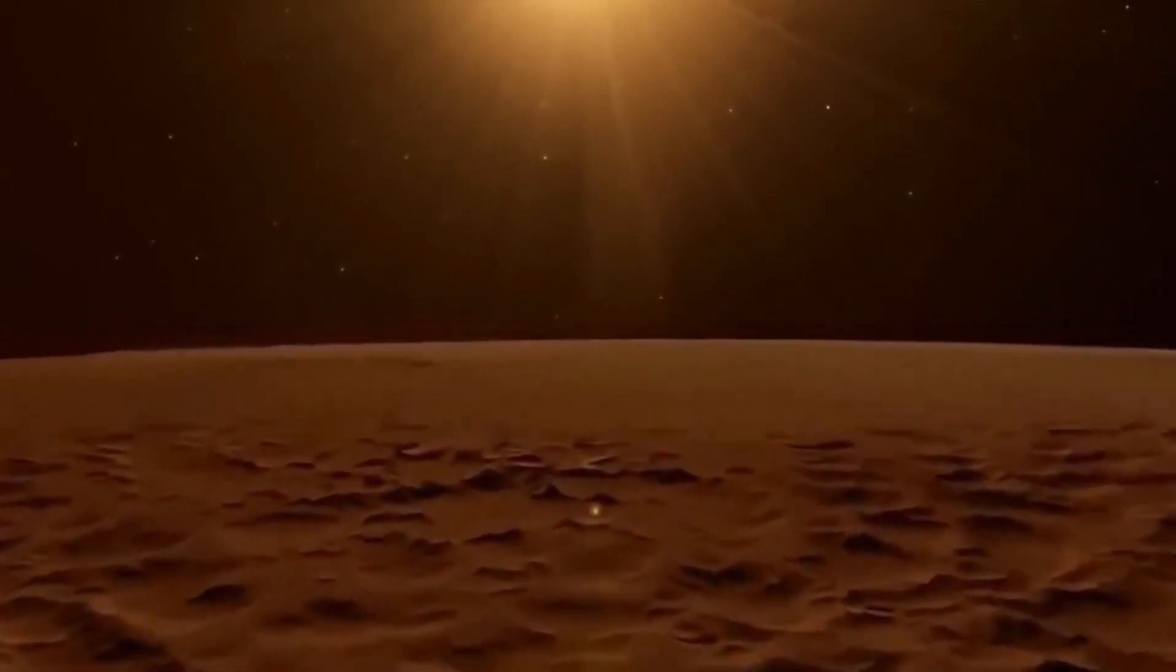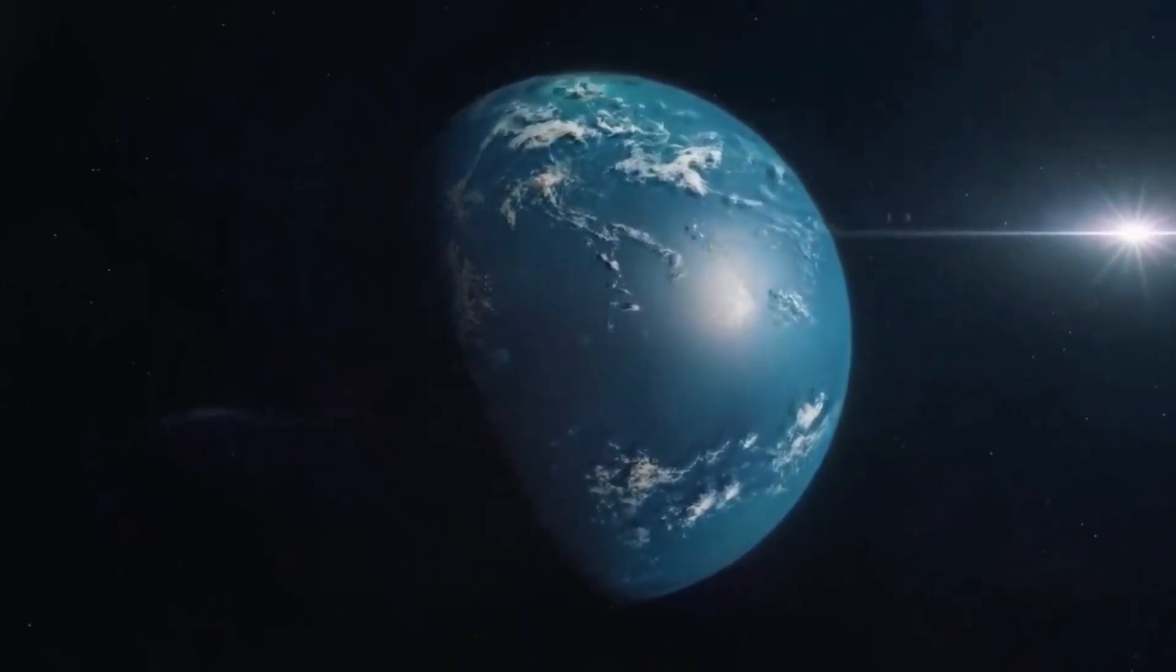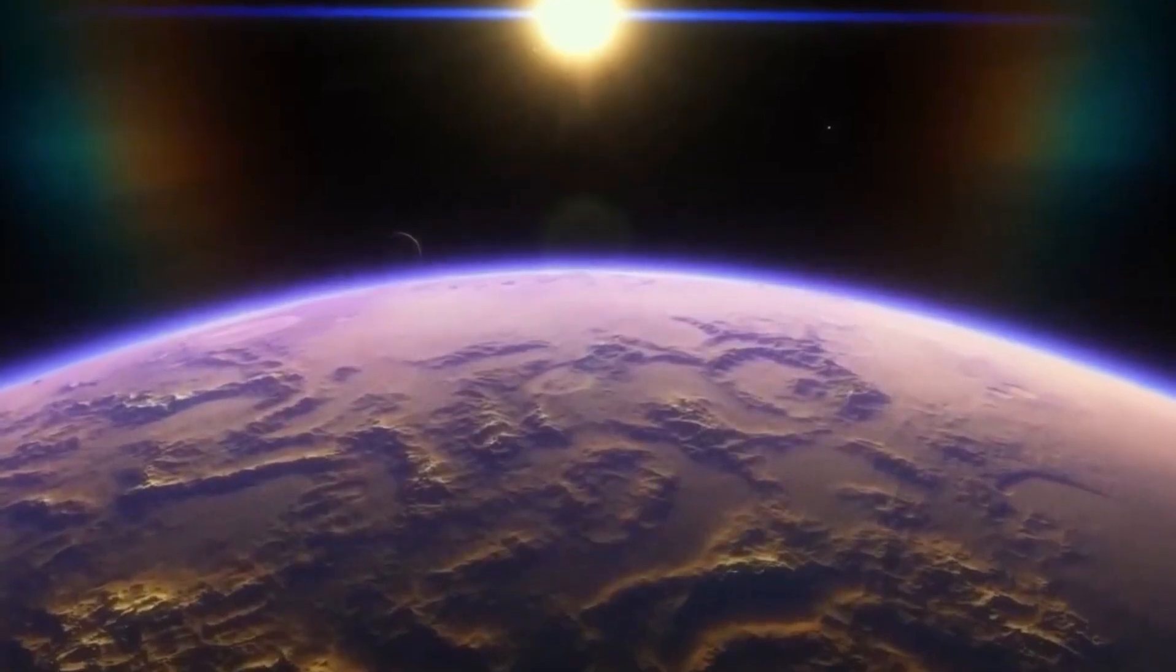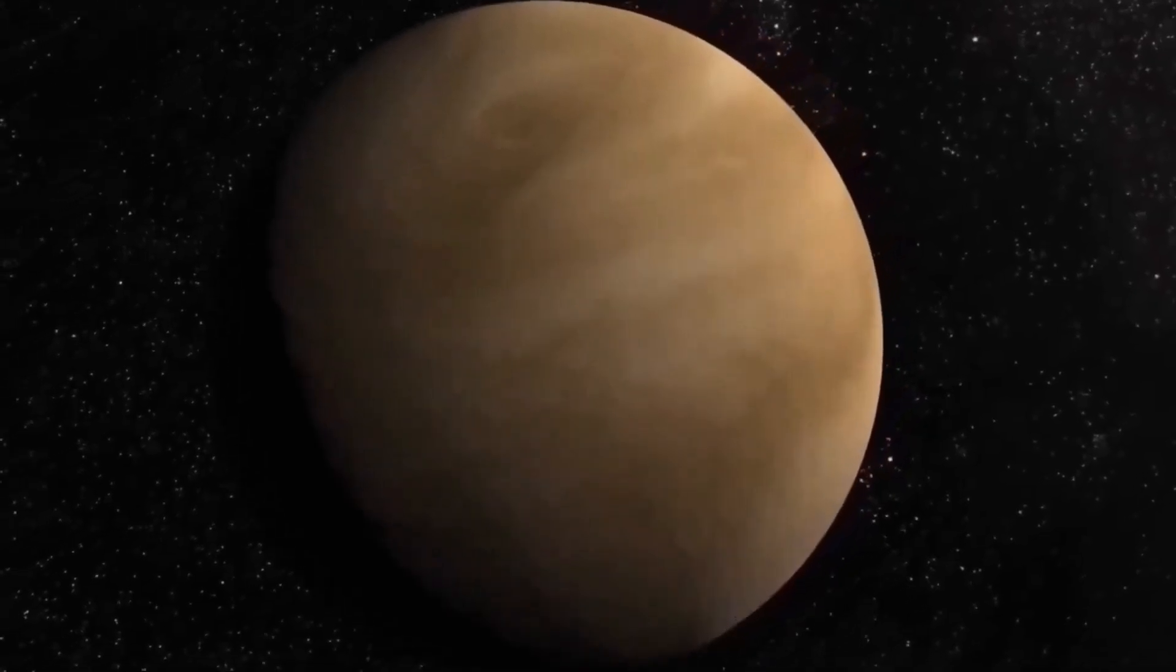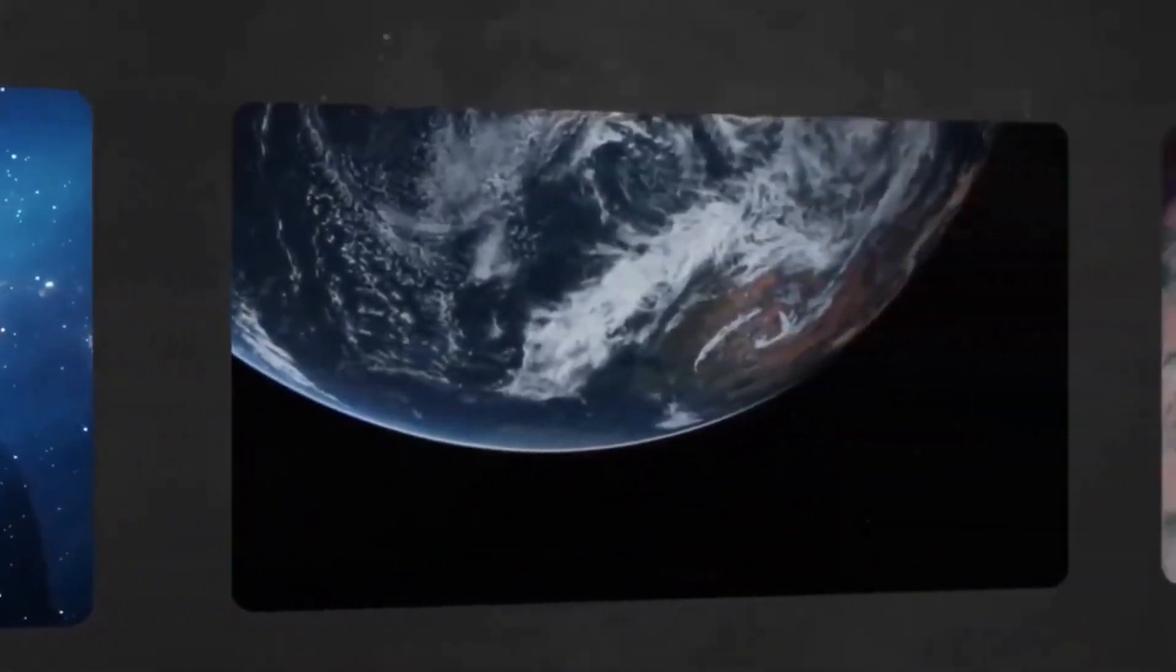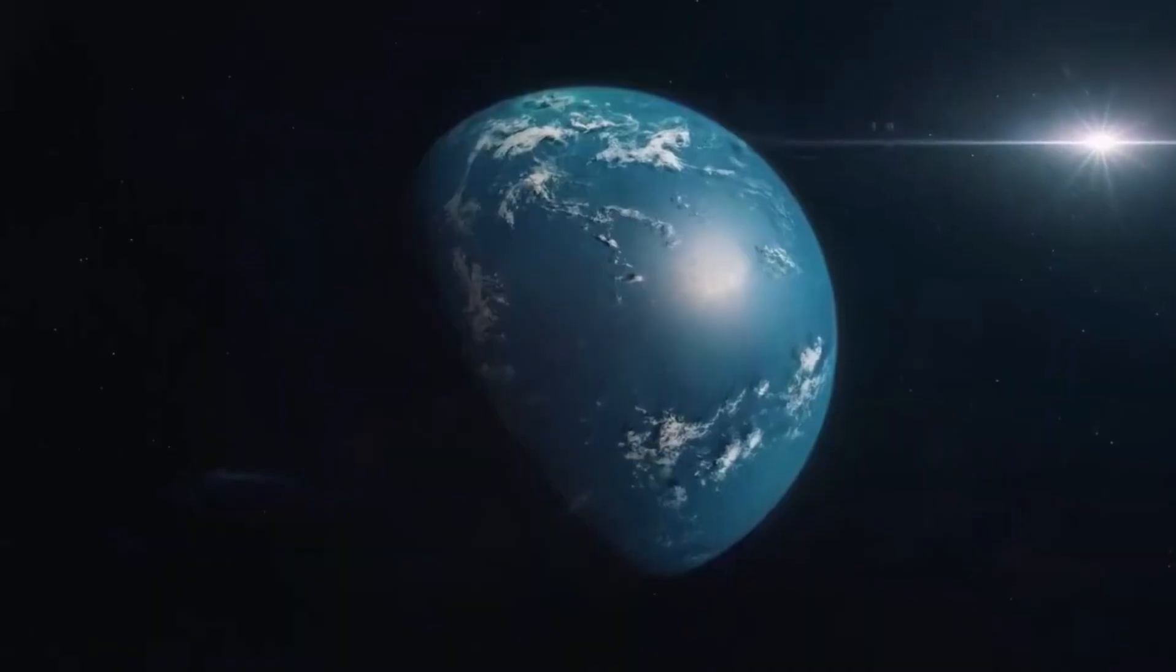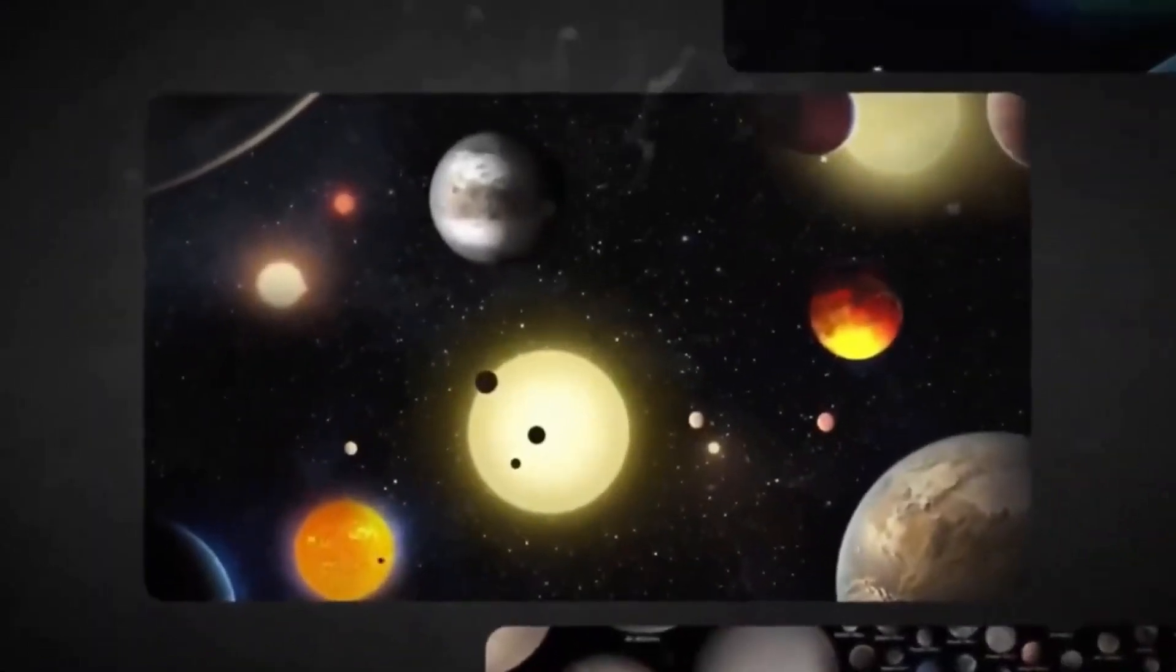Proxima b's proximity to Earth and its location within the habitable zone have generated enormous interest and speculation about its ability to support life. However, it is important to keep in mind that the habitability of an exoplanet is a complex puzzle involving numerous factors. Proxima b is classified as an exoplanet with a mass approximately 1.3 times that of Earth and has an orbital period of approximately 11.2 Earth days.